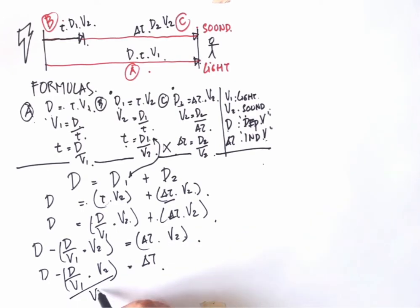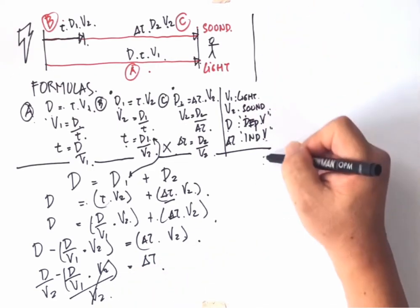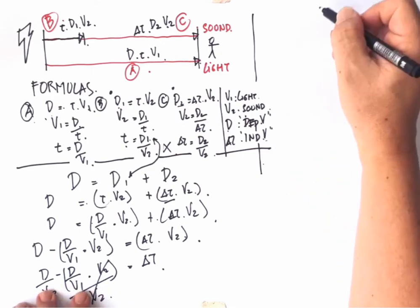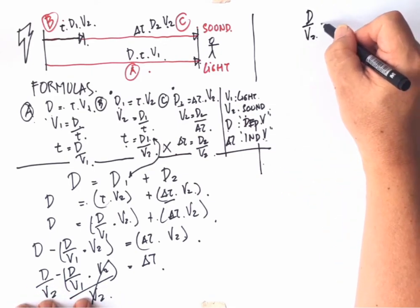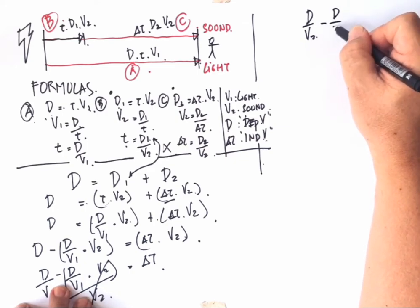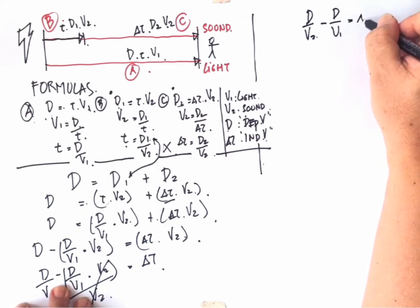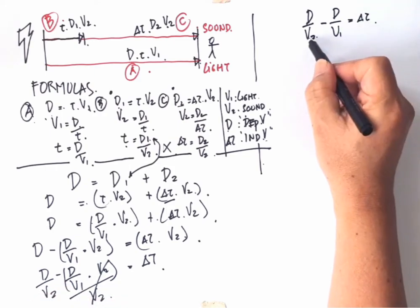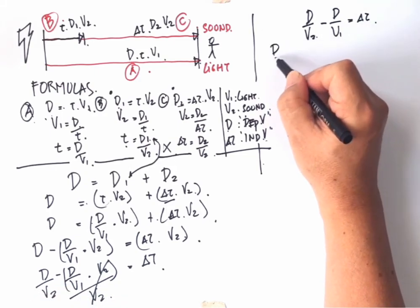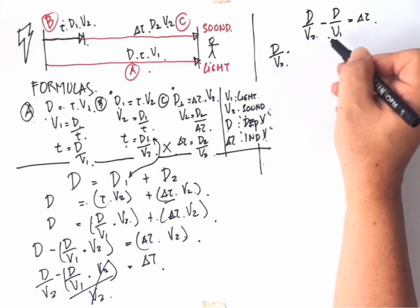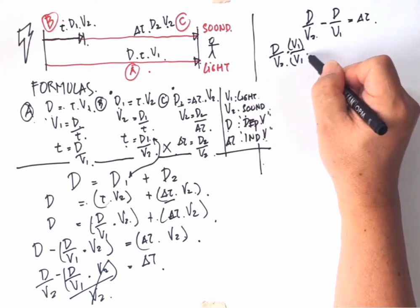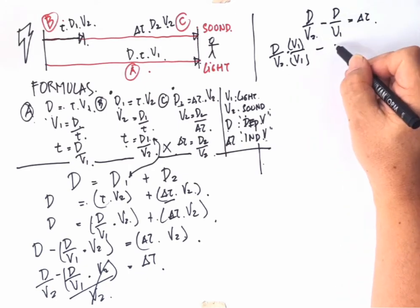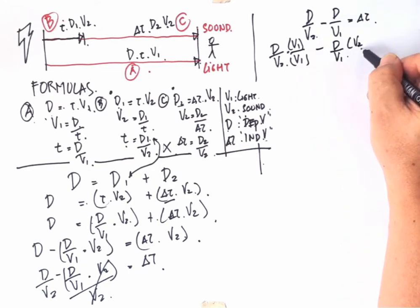And we can write this as D minus D divided by V1 multiplied by V2 equal to delta T, as long as we put this V2 as denominator for all. And we can factor this: D divided by V2 minus D divided by V1 multiplied by V2 equal to delta T. We have D times one over V2 minus D divided by V1 multiplied by V2 equal to delta T.